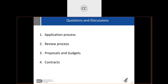Questions can be across the spectrum — application process, review process, budgets, proposals, contracts, intellectual property, all of that. Submit questions through the Q&A box located in your lower right-hand corner. The first question: are these grants generally awarded to academics or to startup companies? We've had more academics than startups, but we've had both successfully move projects to the clinic within the BPN.